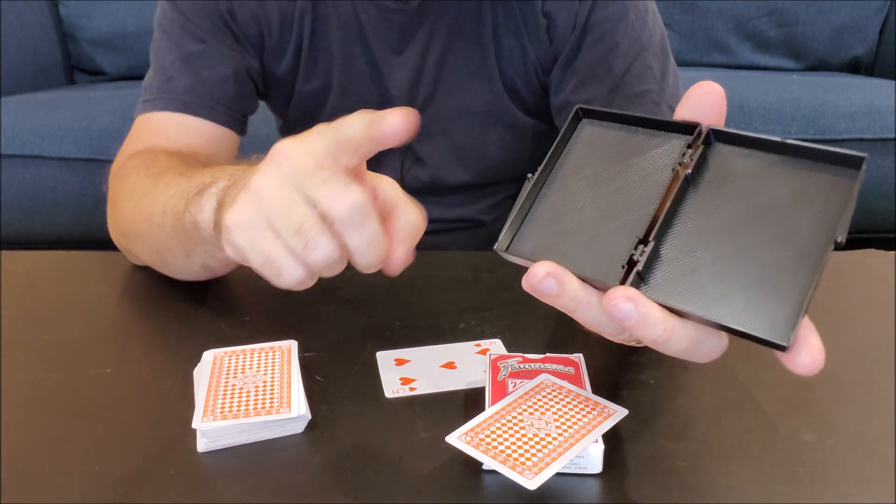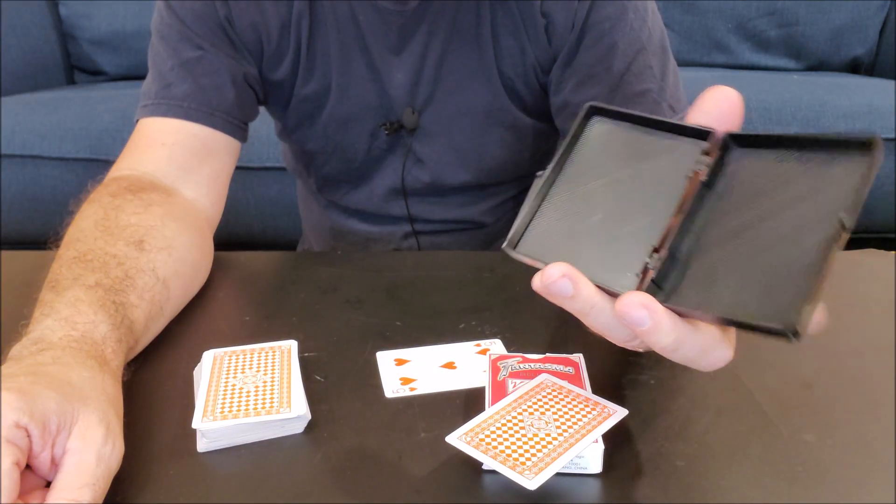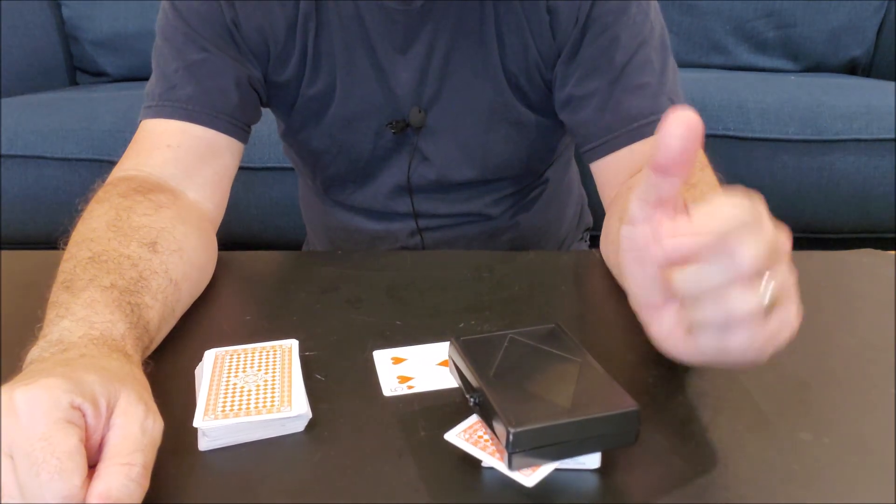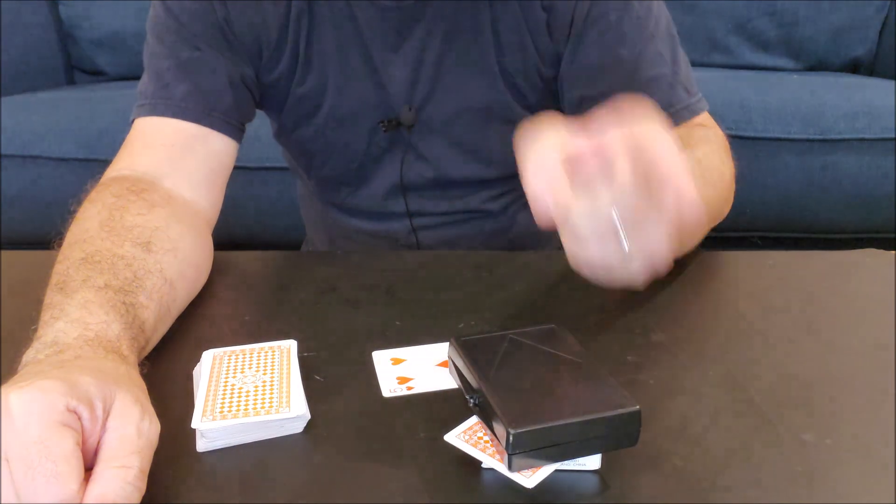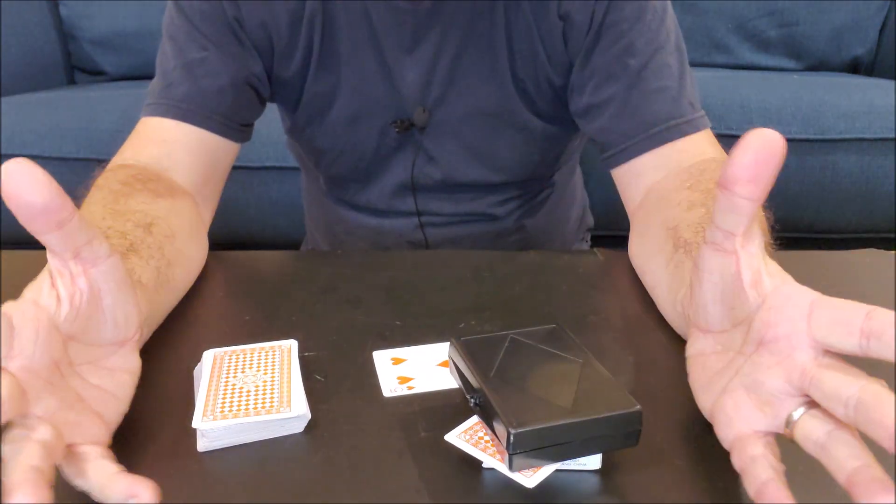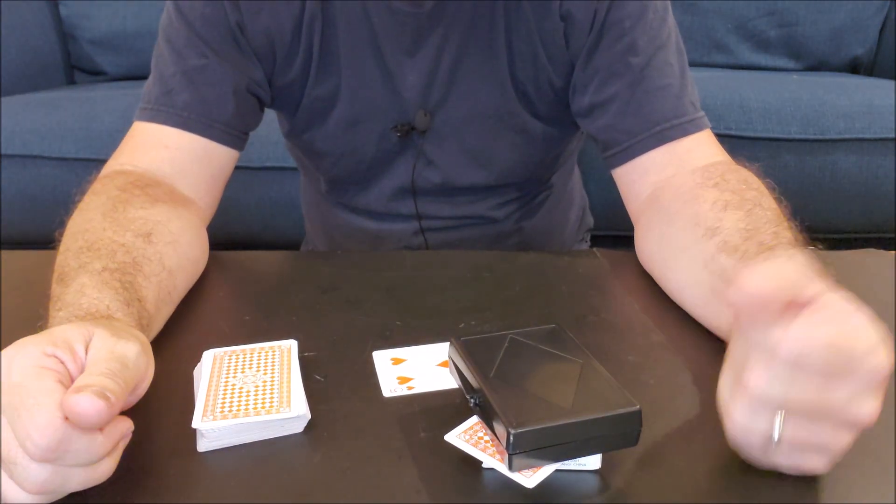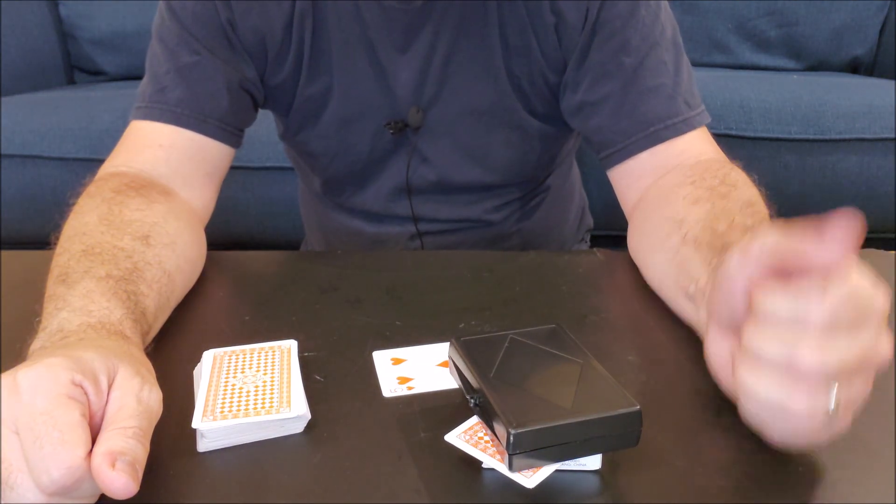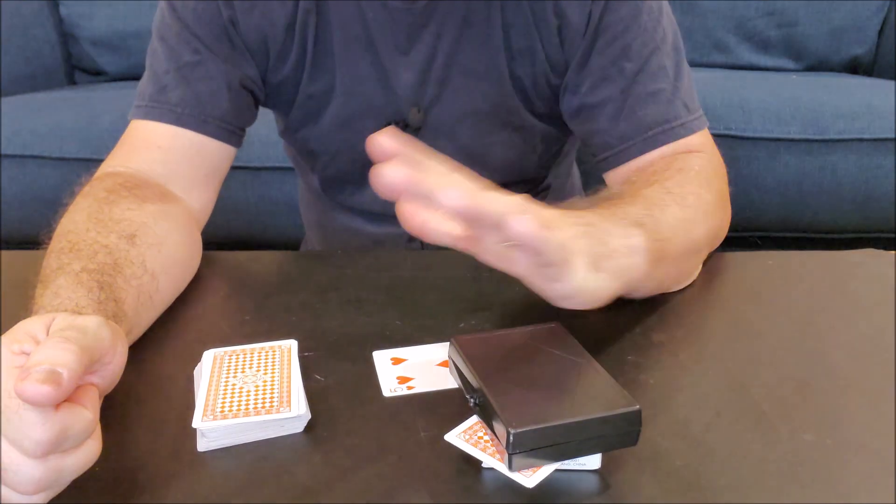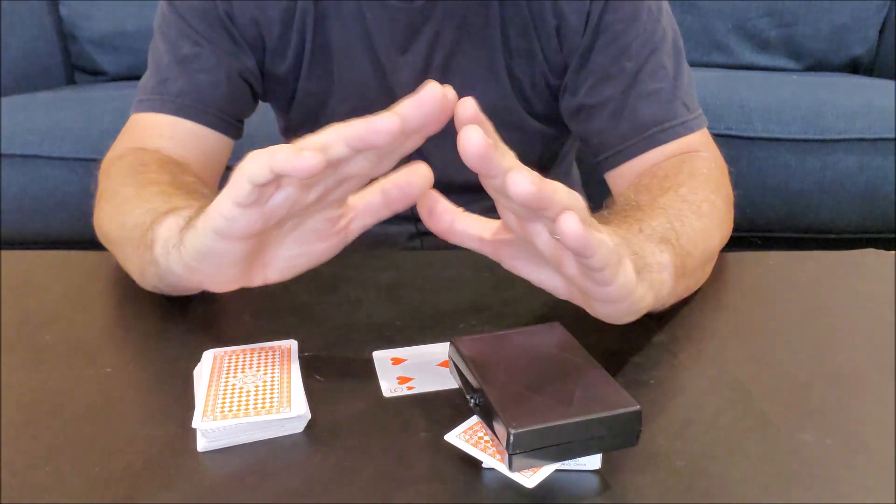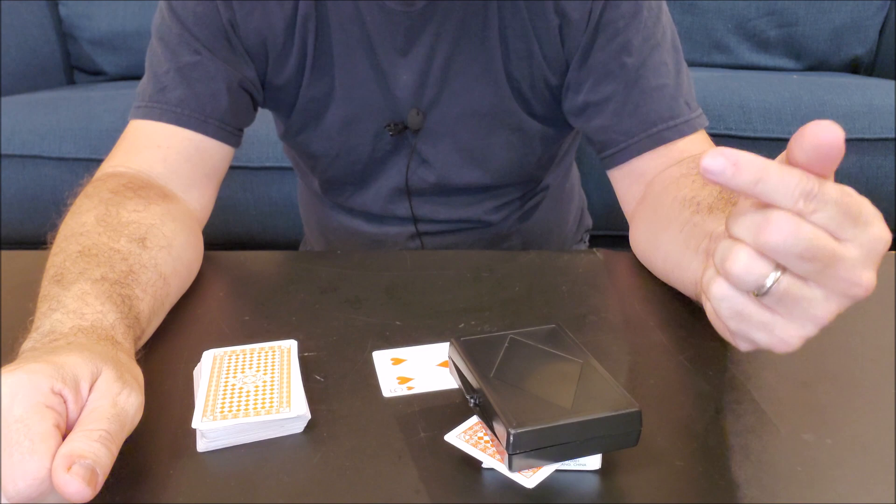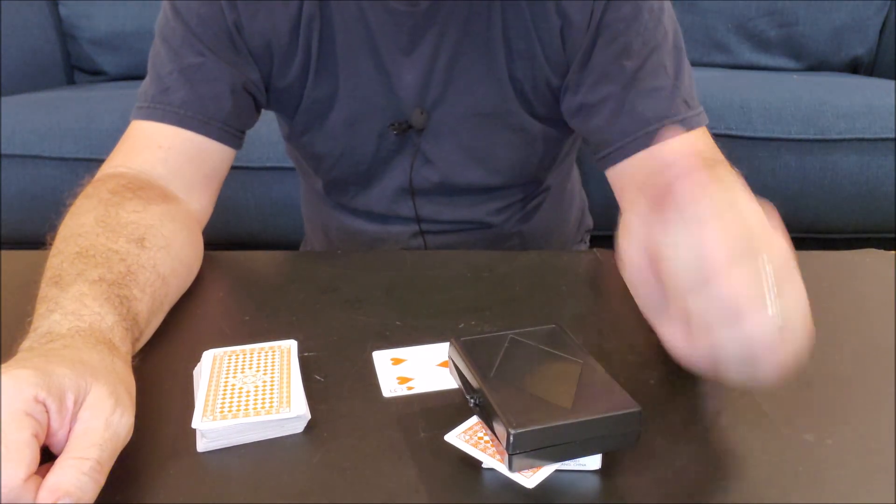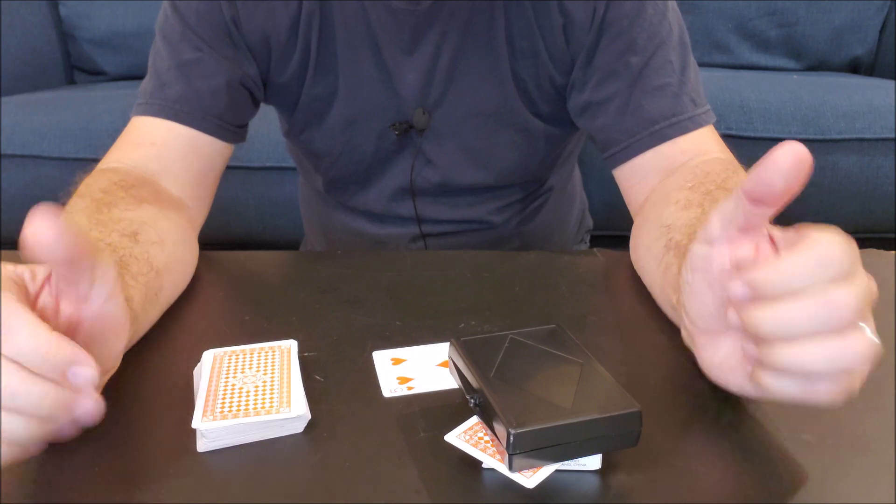Don't forget our three rules of magic. The first rule is never tell how a trick is done. The second rule is never show the same trick twice to the same person. And the third rule is practice, practice, practice. I know these tricks look easy and they are easy, but you always want to make sure that you practice them well so that when you perform them, you do them right the first time. Sometimes when we make mistakes in front of somebody else, it can actually give away how the trick is done and we don't want to do that. So always make sure you're practicing to where these tricks look fantastic. Like and subscribe to this channel and I'll see you guys next time.